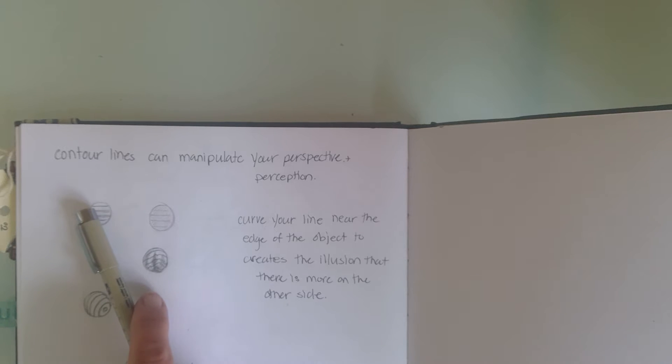We discussed cross contour lines and how they have to go around and show the shape, so they're in the same form as the item you're drawing. When you have a very flat, straight line across, the cross contour line does not properly show the shape.